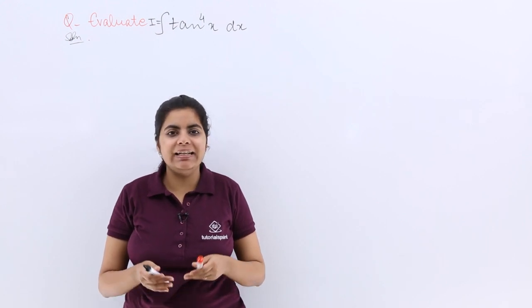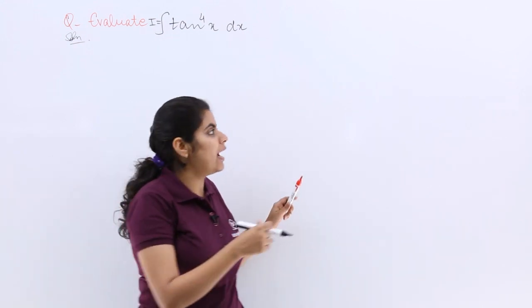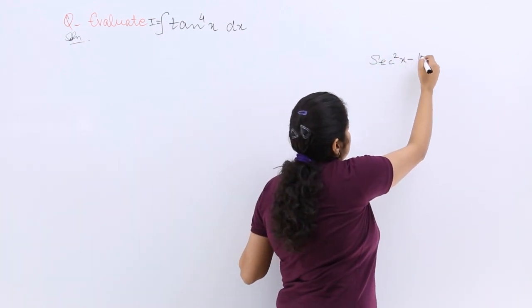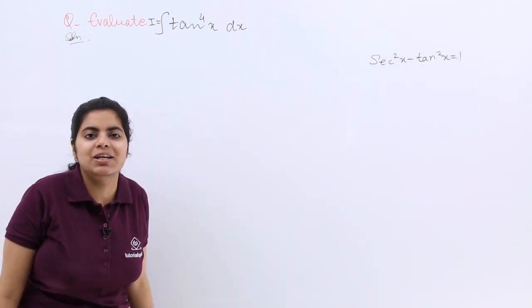Now you know that tan raised to the power 4x can be split into two powers to use the formula that secant square x minus tan square x is equal to one.